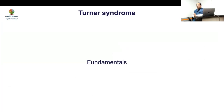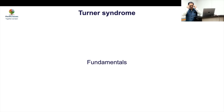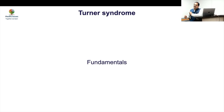We'll go back to the very basics because genetics is the crux of Turner syndrome. Everything we talk about — the manifestations, the treatment — ultimately has a genetic basis. So we need to understand how all these things happen.